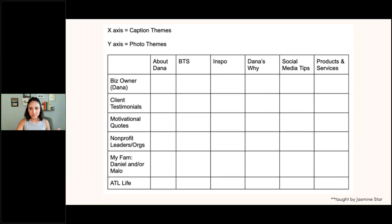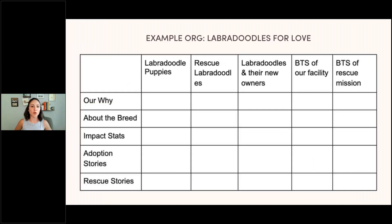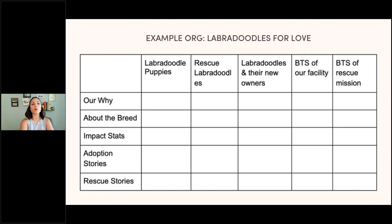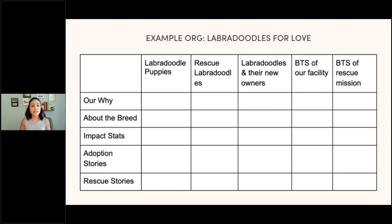This is an example of what mine looks like. At any given time during content planning, I can pull this up. Let's say my first caption theme says 'About Dana' — I'm going to talk about me, my background. The photo or video could be showcasing my family, a photo of Atlanta, a picture of me as the business owner, or a motivational quote. This allows creative brainstorming and focuses me on what my post should be. I can literally talk about one topic with six different pieces of content in different ways.